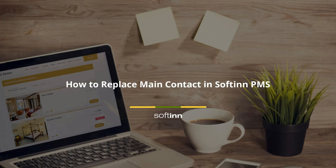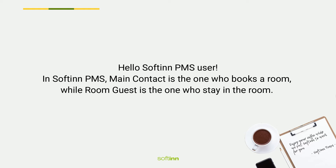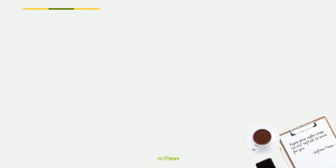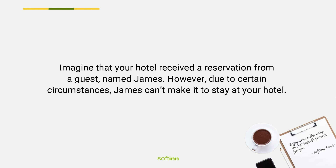How to replace the main contact in Soft and PMS. In Soft and PMS, the main contact is the one who books a room, while the room guest is the one who stays in the room. The main contact could also be a room guest if he or she stays in the room.